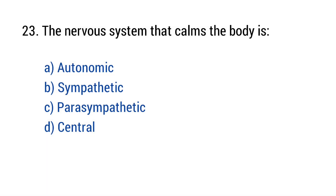Question number twenty-three. The nerve system that calms the body is. The right answer is option C: Parasympathetic.